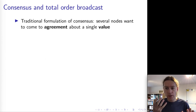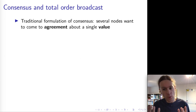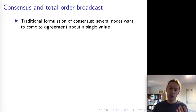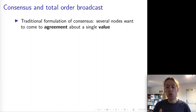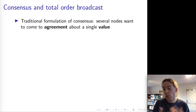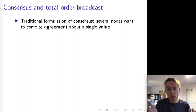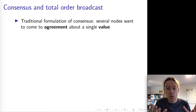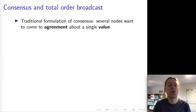Consensus and total order broadcast are two different problems, but they are actually quite closely related. The traditional way consensus is formulated in distributed systems is that you have multiple nodes, each node may propose a value, and you want all of the nodes to decide on the same value. Think of it as several friends deciding where to go for lunch — they propose different restaurants, and by some process one proposal gets picked and everybody goes to the same place.